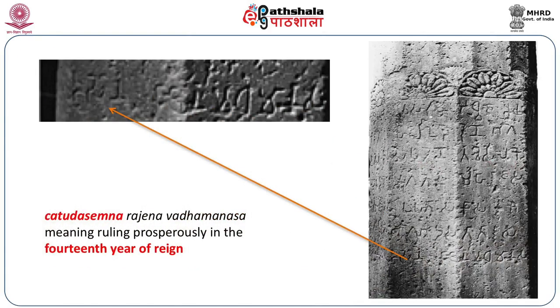The same is the case with the well-known Visatagar pillar inscription of the 2nd century BCE, where we find that one Kashiputra Bhagavadra, known to have been a Shunga ruler, to whose court one Yavanaduta — Heliodorus — came as an ambassador and engraved this inscription. Here again, the king Kashiputra Bhagavadra is called Chattu Dasengna Rajana Vada Manasa, meaning he is ruling prosperously in the 14th year of reign.